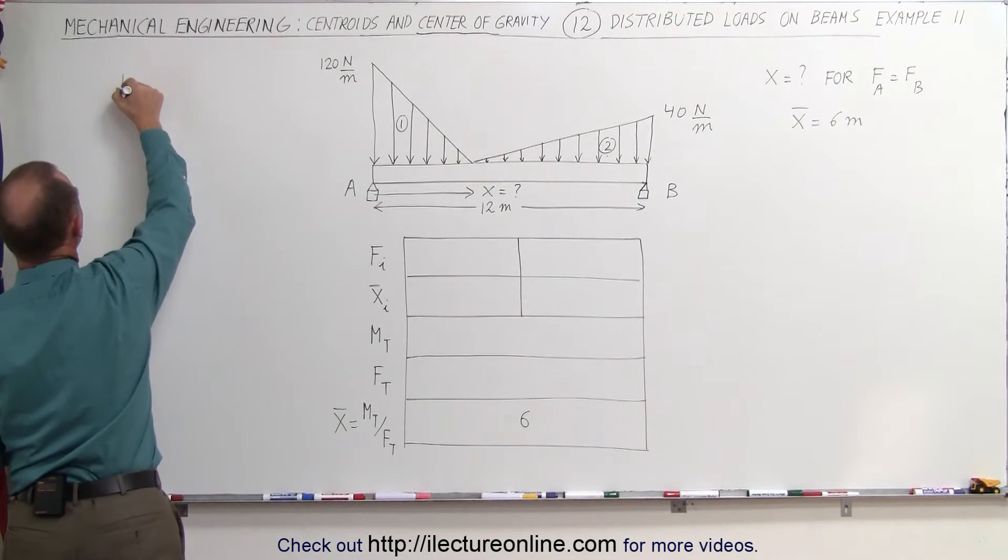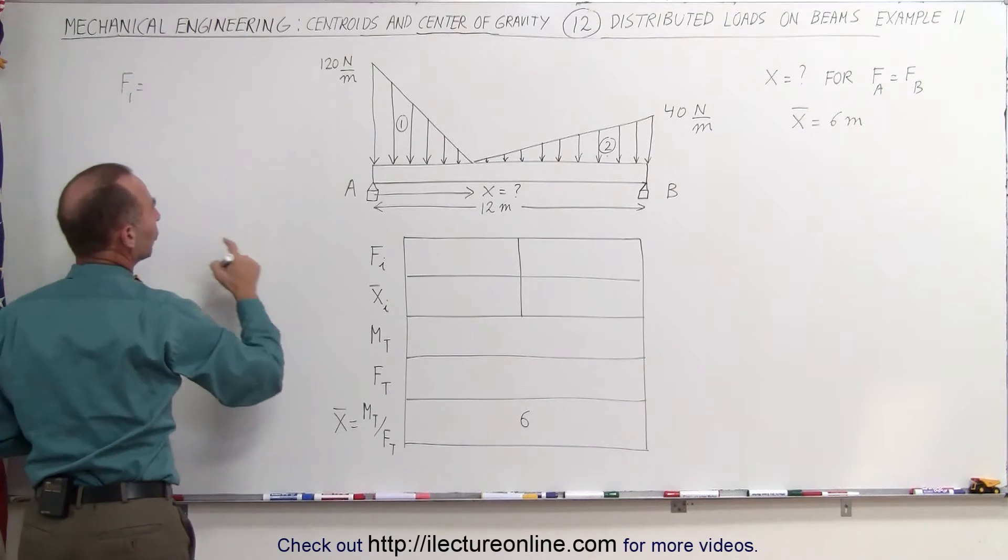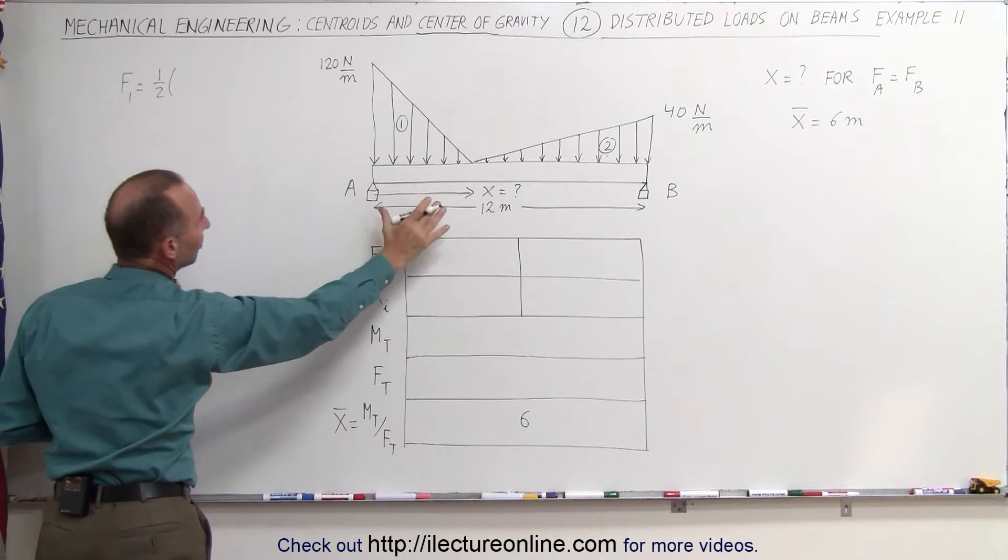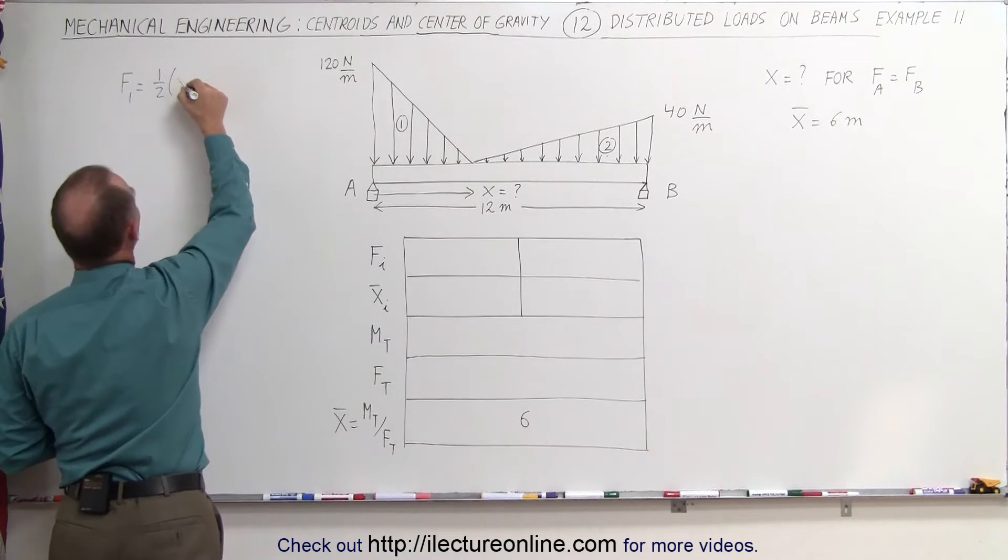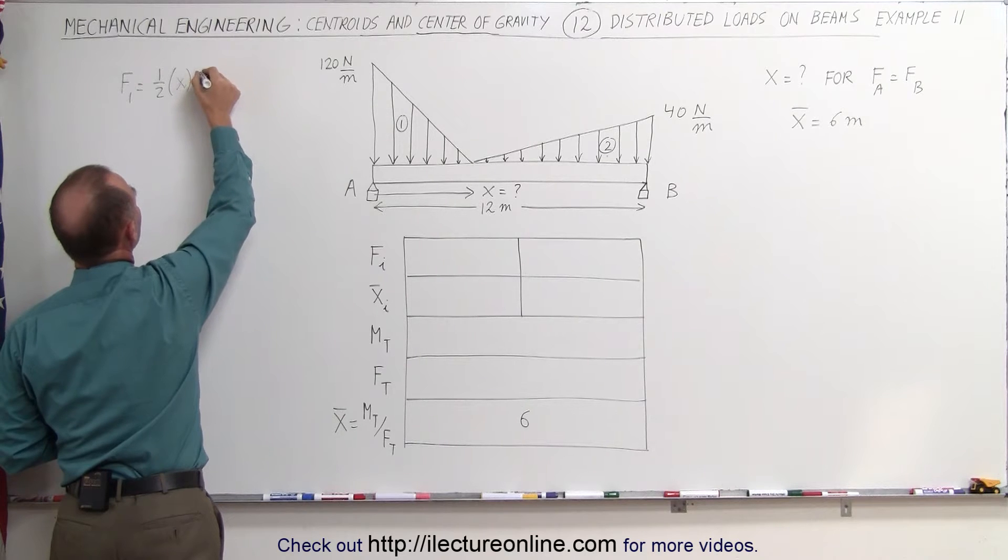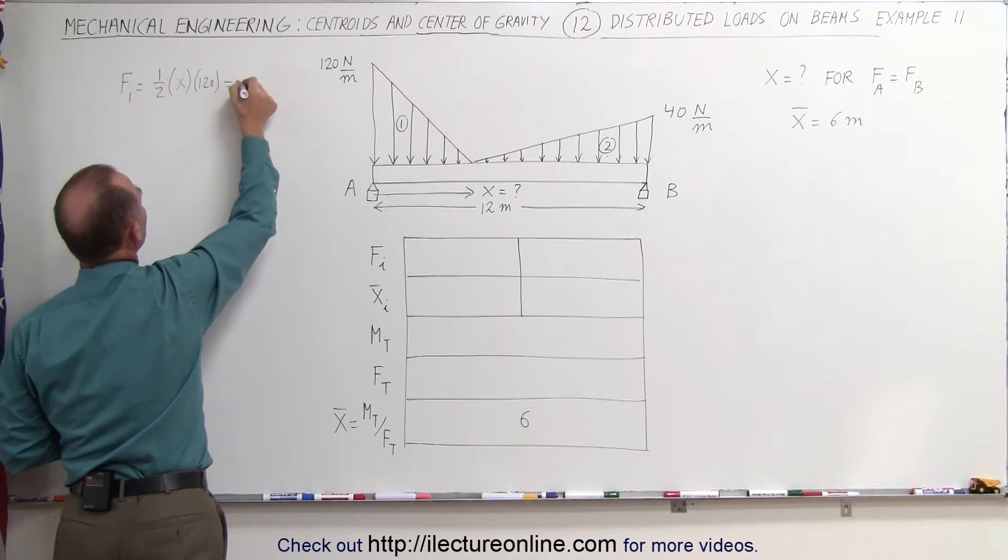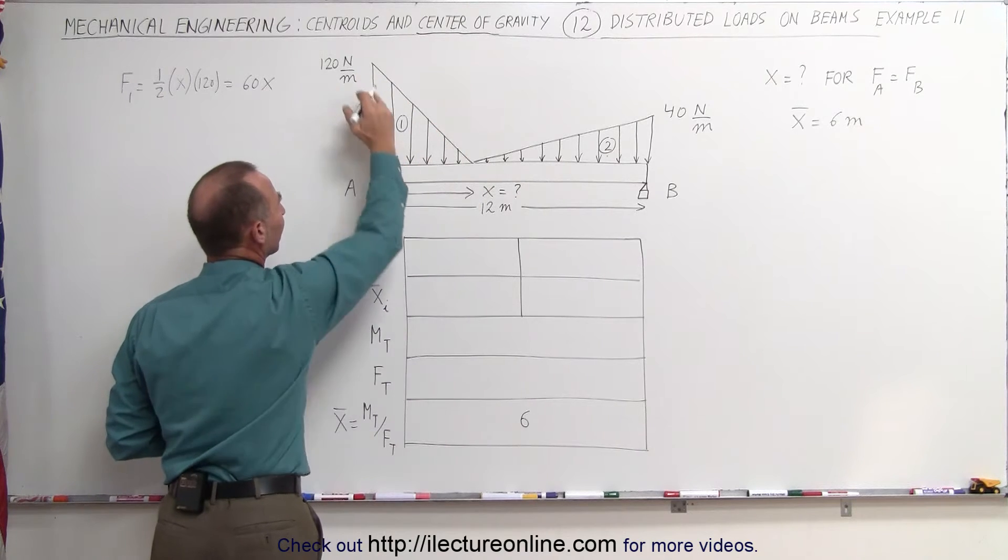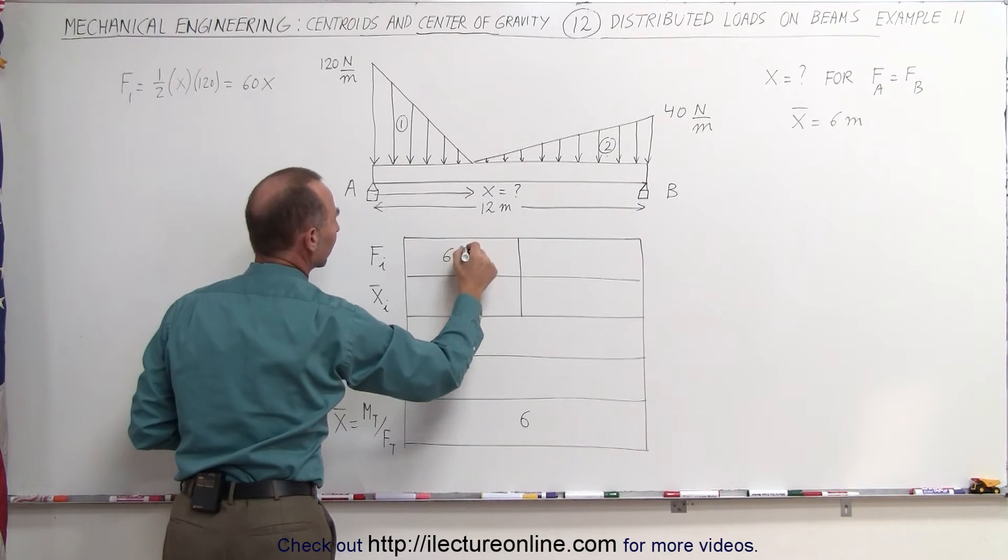So F sub one is equal to, since it's a triangular shape, one-half times the base, the base would be distance of x, and the height would be 120, which means it is equal to 60x. That is the total force caused by the first load segment, 60x.